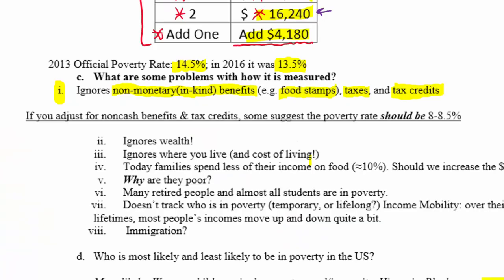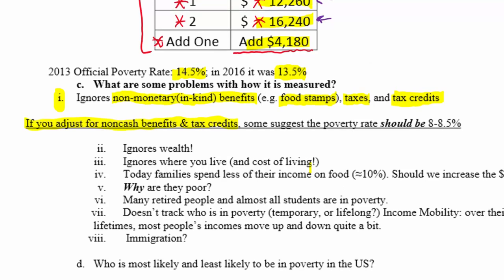Several economists have done studies adjusting for these kinds of benefits and tax credits. When you add the value of these other benefits into income levels, some authors have found that the poverty rate might not be as high as it appears — things don't look quite as bad as they would if you ignore them.